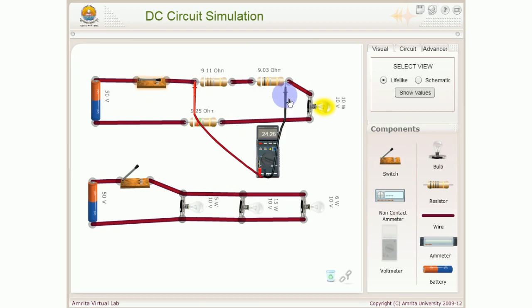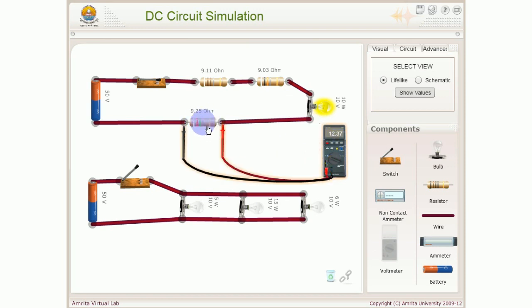So doostho aap dekh sakti hai ki is 9.11 ohm resistor ke across voltage jo mil rahe hai woh hai 12.18. I request you ki aap ye jo voltage ki readings hai in ko note kar lye. Is load ke across voltage hai 12.08. Is bulb ke across voltage kitna raha hai 13.37 volt. Is load ke across jo voltage hai 12.37 volt.